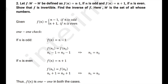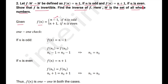The next question: function f is defined on whole numbers, where f(n) = n − 1 if n is odd, and f(n) = n + 1 if n is even. We need to show that f is invertible and also find the inverse of f. Here W is defined as the set of all whole numbers.